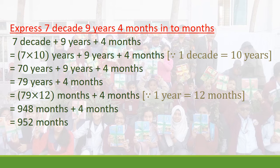Next line: 70 years plus 9 years are the same units, so we add them: 79 years plus 4 months. Now we convert years to months: 1 year equals 12 months, so 79 × 12 months plus 4 months. Next line: 79 × 12 = 948 months plus 4 months.